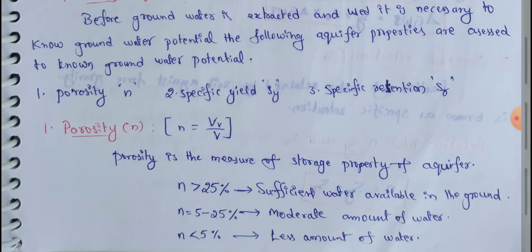First one: porosity, n. n equals volume of voids divided by total volume. Porosity is the measure of storage properties of aquifers.